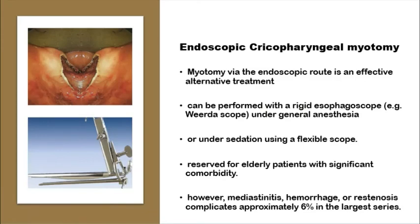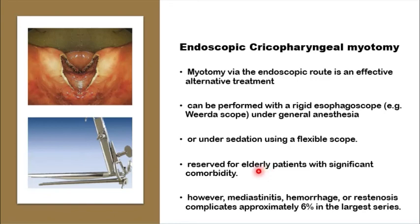Endoscopic cricopharyngeal myotomy is an effective alternative to open myotomy. First described using rigid endoscopy under general anesthesia, it uses a rigid scope — such as the Weerda scope with adjustable blades — to expose the cricopharyngeus muscle clearly. It can also be performed under sedation using a flexible scope. The operation is sometimes reserved for elderly patients as it is a short procedure with a shorter hospital stay. Paradoxically, these are the patients more at risk of complications, which include mediastinitis, pharyngeal or oesophageal perforation, hemorrhage, and restenosis — occurring in up to 60% of cases in the largest series.